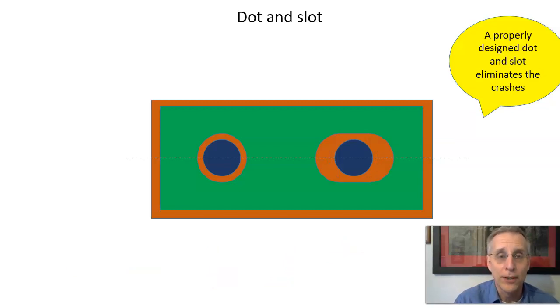Instead of the hole on the right, we put in a slot. Then when the pin on the right moves from tolerance of position, it can move there and not have any crashes. It can move that way and not have any crashes. And life is good. It's just a beautiful design.